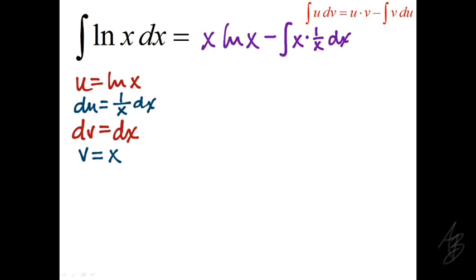So just using the integration by parts formula, we get x times the natural log of x minus the integral of x times 1 over x with respect to x. Now, choosing those u and dv expressions, what we end up with here is an integral where the x and the 1 over x cancel each other out, and we are essentially just taking the integral of 1.